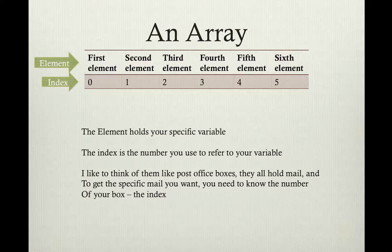Almost all programming languages start counting the index at 0. So if you were going to have 10 array spots, they wouldn't be 1 through 10. They would be 0, 1, 2, 3, 4, 5, 6, 7, 8, 9. You get all 10, but you typically in most programming languages start counting at 0.